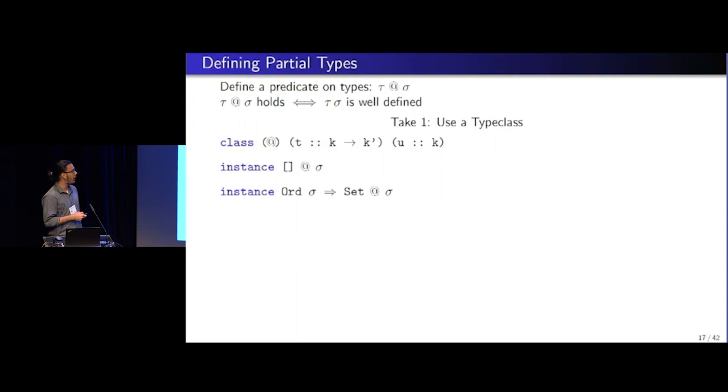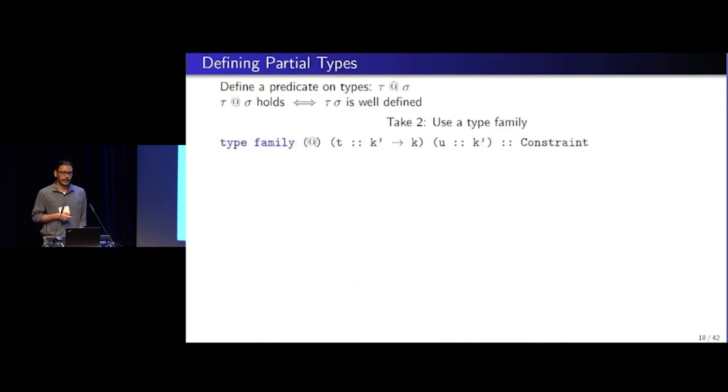For partial data types, there would be an instance, odd sigma implies set at sigma. So this would mean that whenever we know that sigma is ordered, set at sigma holds. But this is not exactly what we wanted to define. We can only go one way, right? Not the other way. Because type classes do not allow bidirectional reasoning.